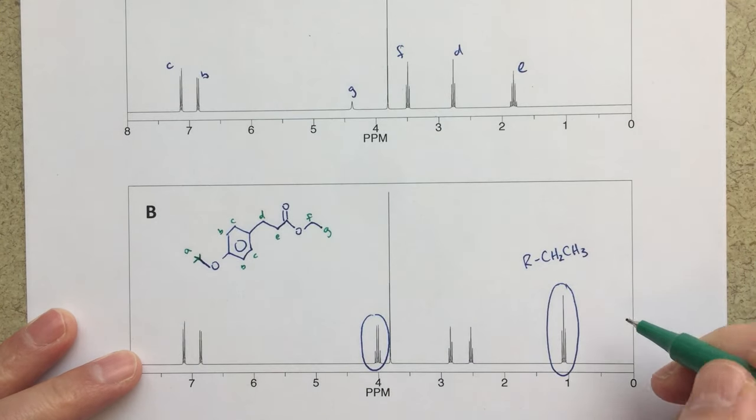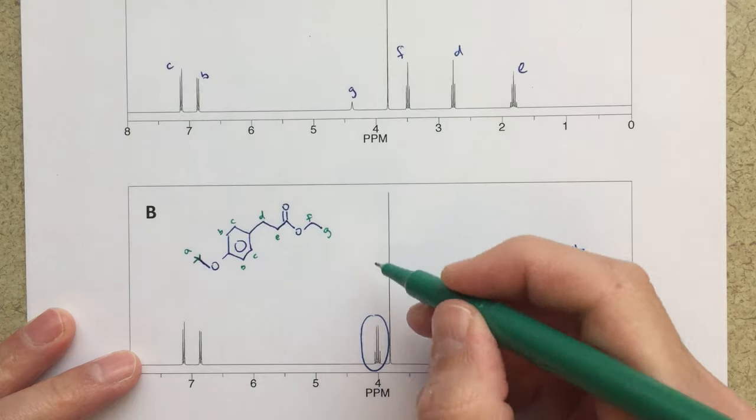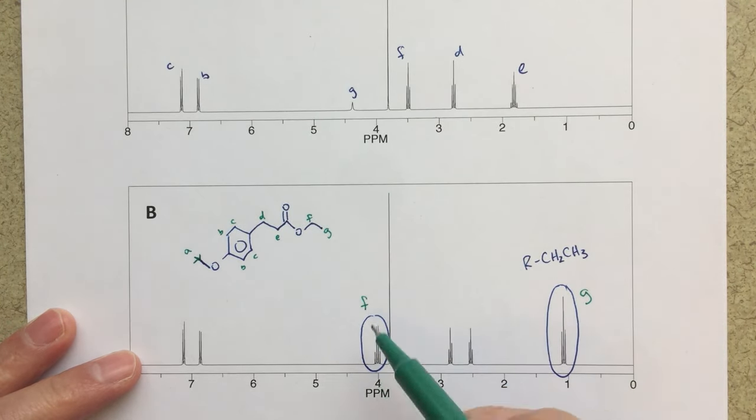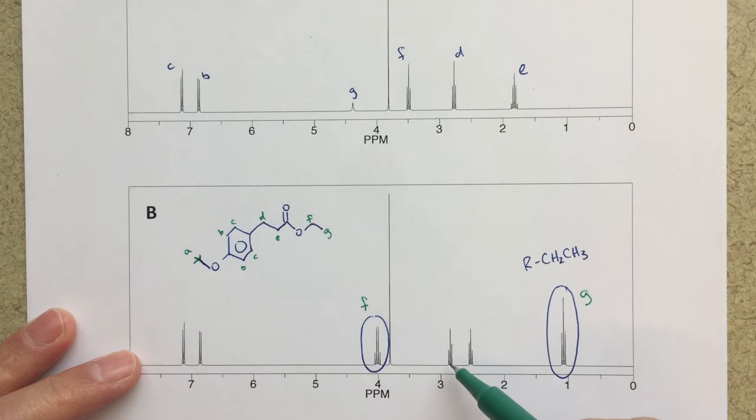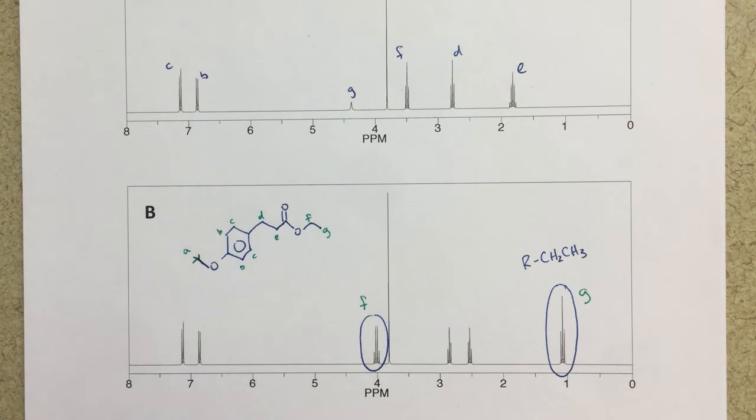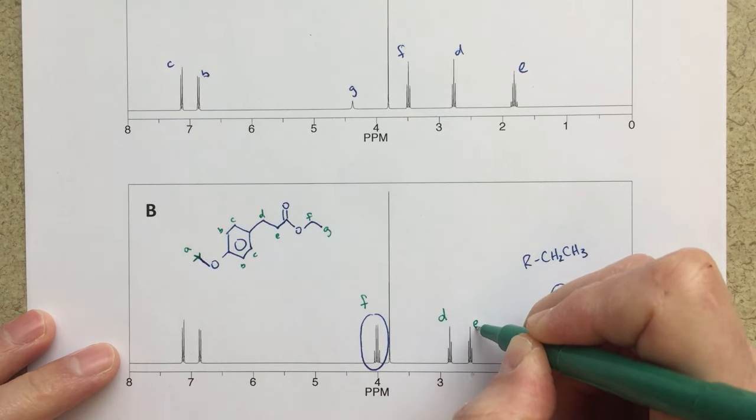So we already talked about F and G. I'd expect this to be G, a three H triplet. We'd expect this to be F, a two H quartet. Now for D and E, those are going to clearly be these two peaks here. And again, deciding which one is which might be something that is a little bit confusing. I'm going to go with, this is D and this is E.